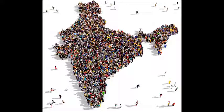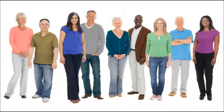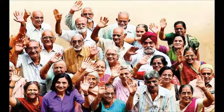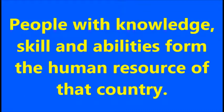The people living in a country constitute the population of that country, which consists of children, adults and senior citizens. Those under 14 years are considered children, those between 15 and 60 years are considered adults, and those above 60 are identified as senior citizens. People with knowledge, skills and abilities form the human resources of the country.